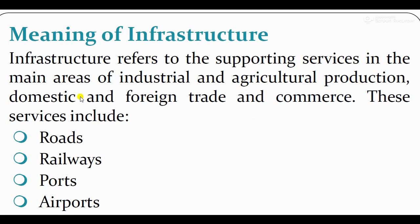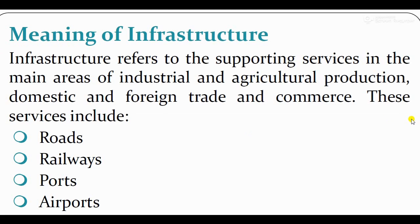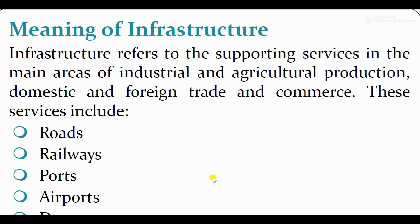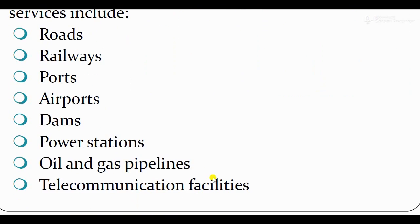Infrastructure का मतलब है वो services जो support करती हैं different areas में — mainly industry और agriculture जिसमें हम production करते हैं। These services include roadways, railways, ports, airports, dams, power stations, oil and gas pipelines, and telecommunication facilities — all are examples of infrastructure.